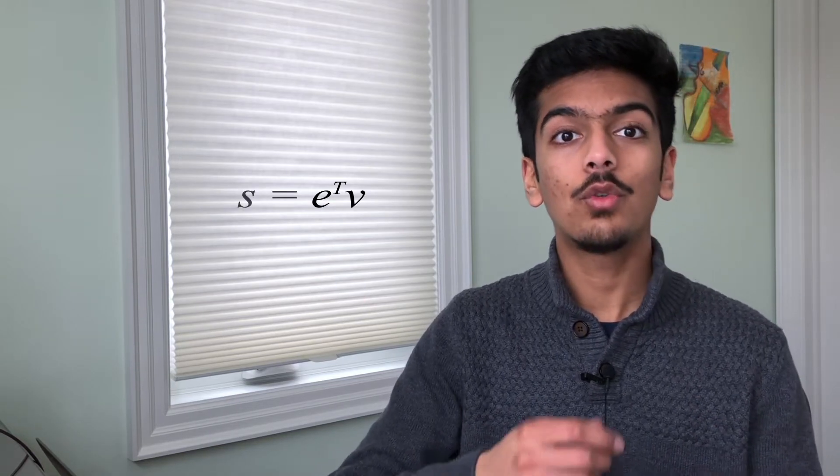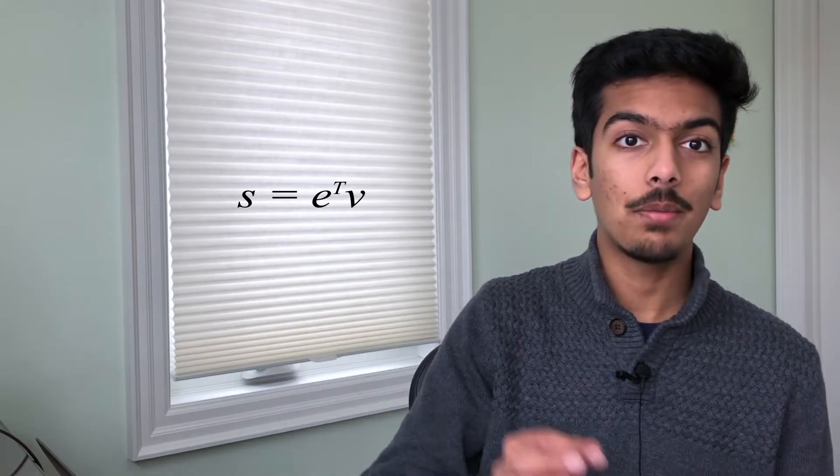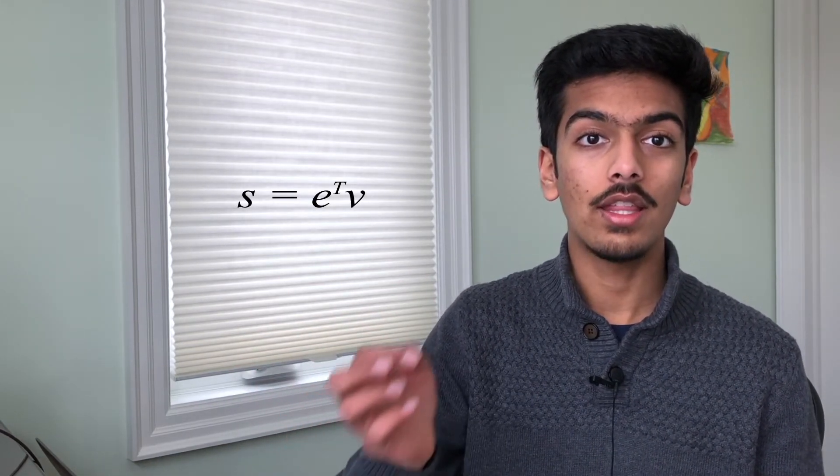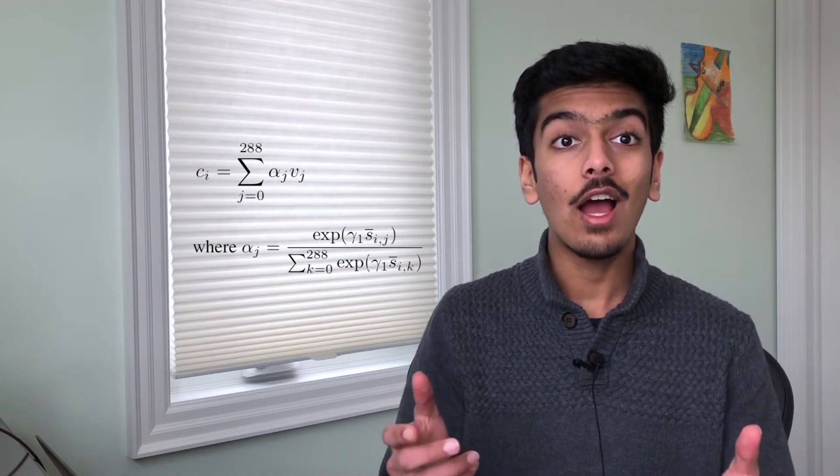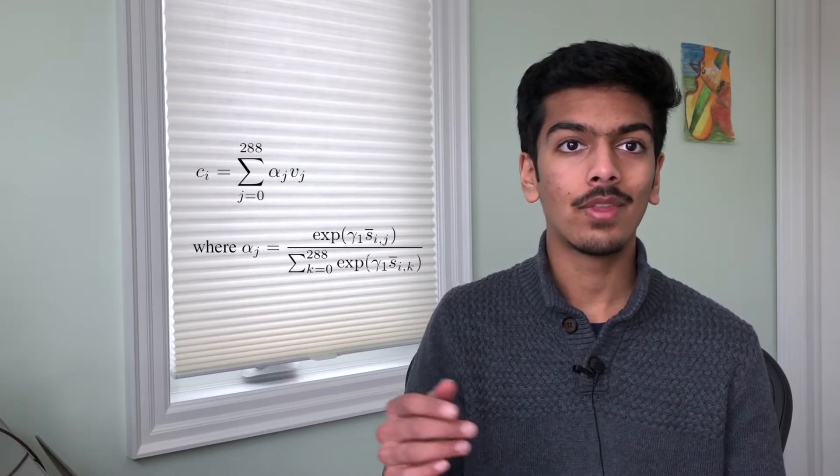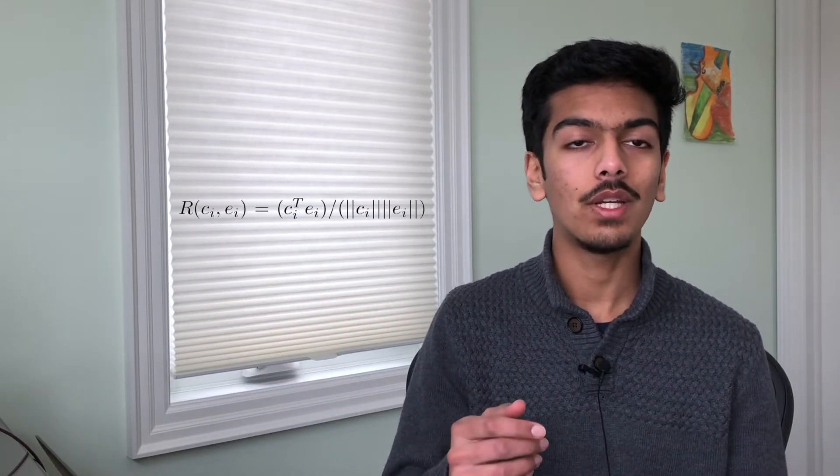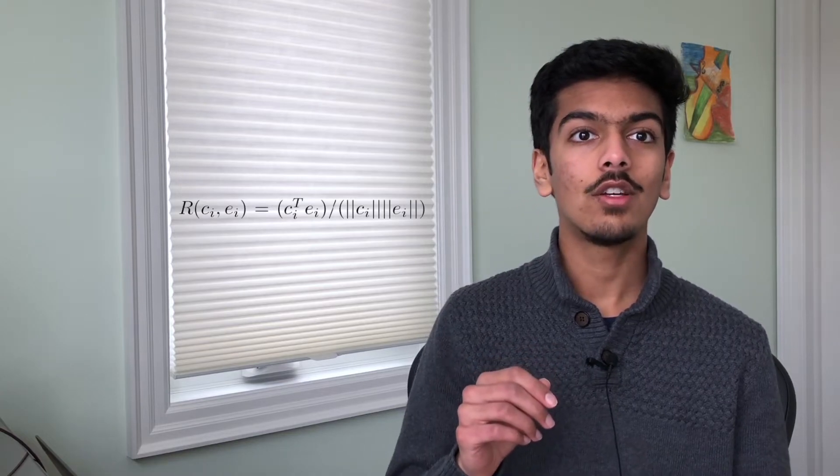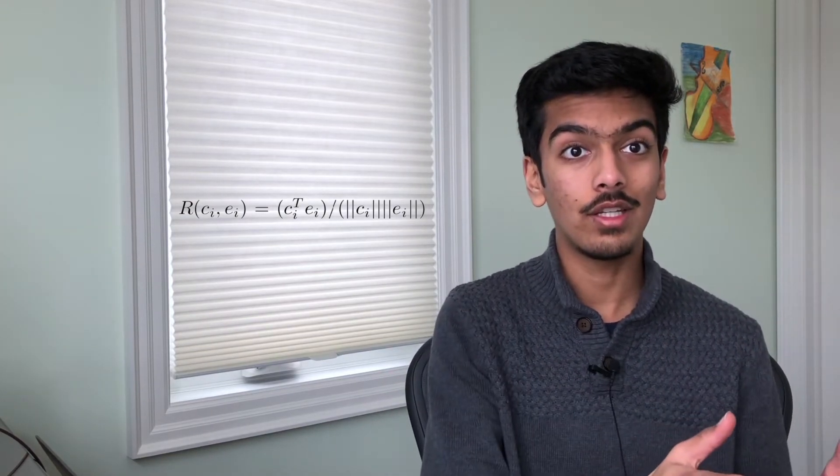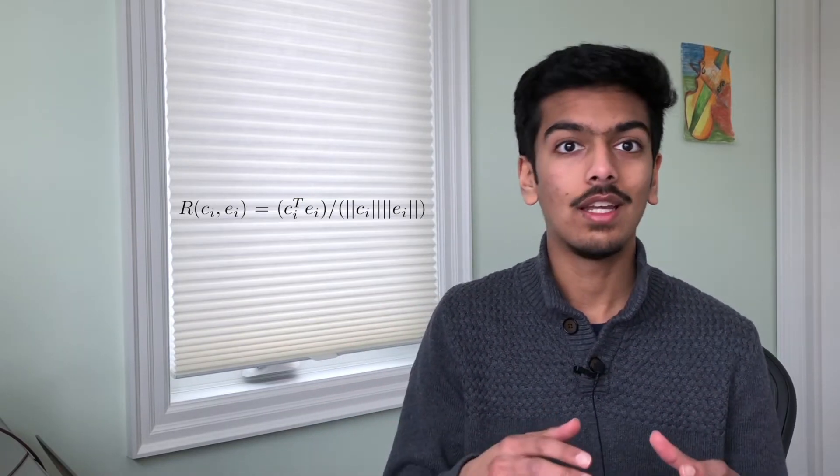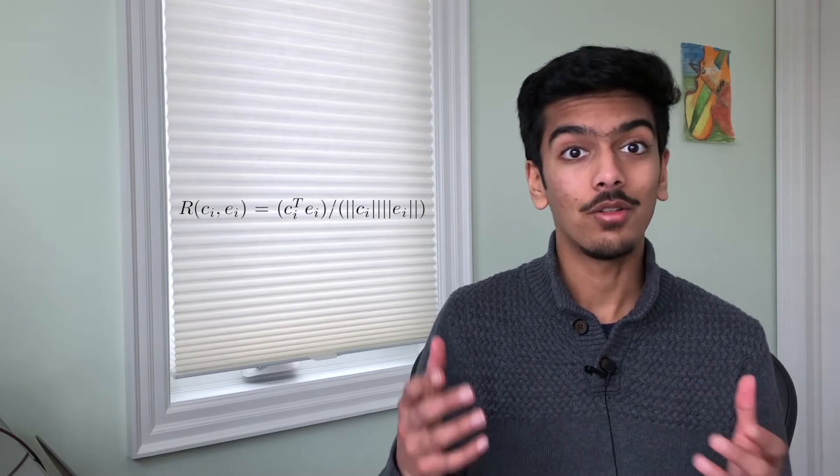Then we take the dot product between V, our local image features, and E, our word level embeddings, to compute a similarity matrix. So S of IJ represents the similarity between the Ith word and the Jth sub-region. We then use this formula to get the weighted sum over all the sub-regions according to how much word I impacted them. Then we use this formula to get the cosine similarity between word EI and CI, which is the weighted sum over all the sub-regions. So if these two have a high similarity, that means that the model did a good job of taking the word and understanding it and painting an image accordingly. And if they don't match up that well, then the model didn't do a good job.